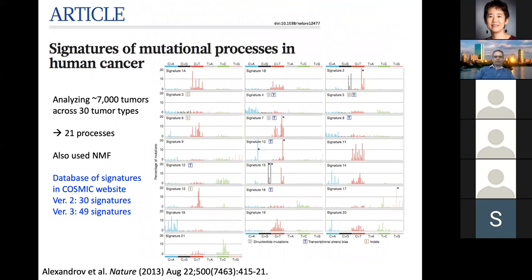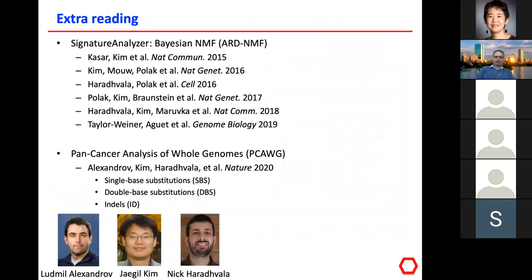The Sanger group then studied 7,000 tumors and reported 21 different signatures, then continued with version 2 reporting 30 signatures. Most recently, together with them, analyzing the pan-cancer analysis of whole genomes with more than 2,500 whole genomes plus additional exomes, we identified roughly 49 signatures of single-base substitutions, and we are now also looking at signatures of double-base substitutions and indels.